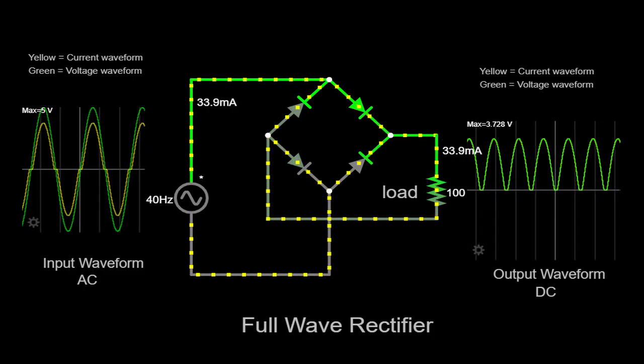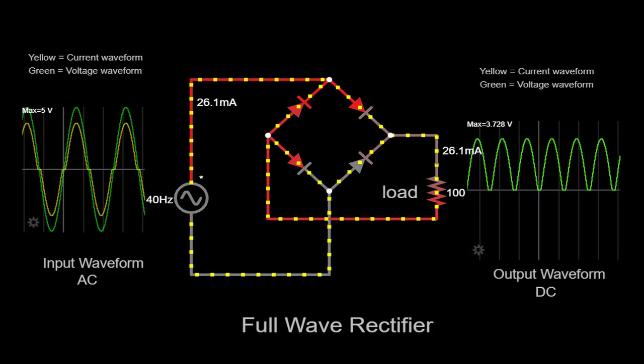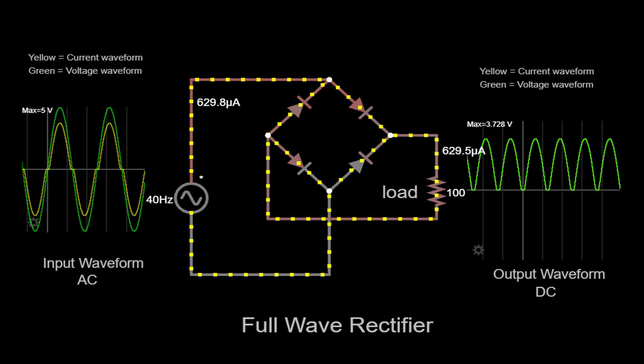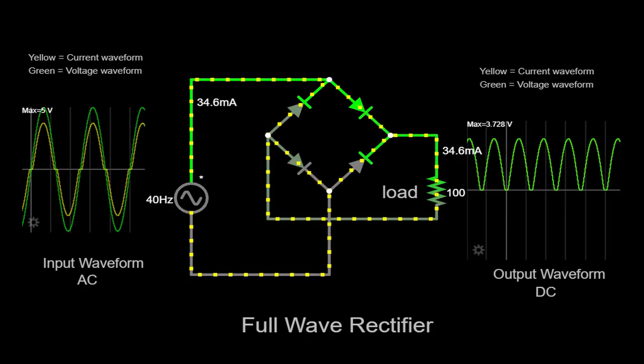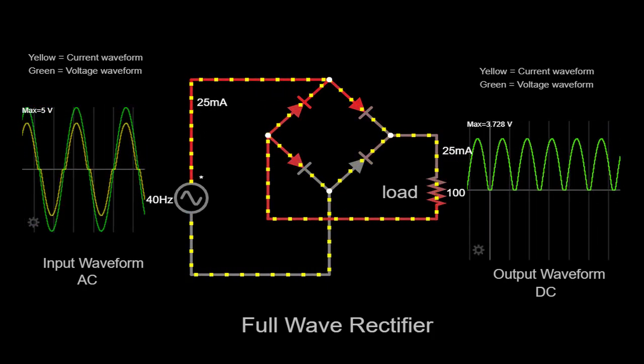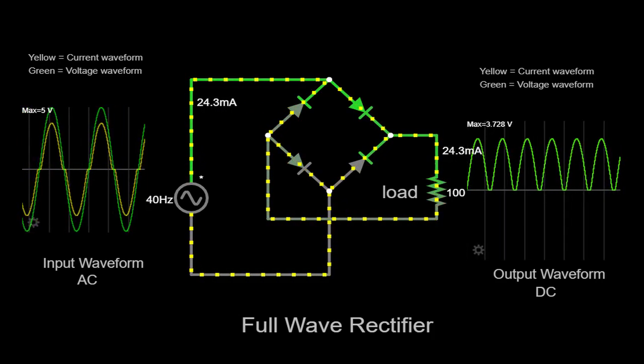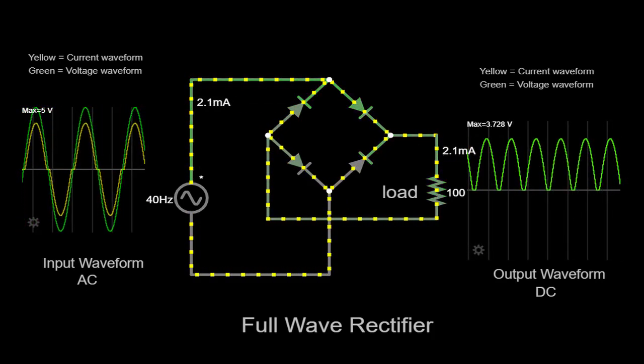In conclusion, a full-wave rectifier is a crucial component in the world of electronics. By utilizing diodes to allow current flow in only one direction, it effectively converts AC to DC by removing the negative half cycles of the input waveform.